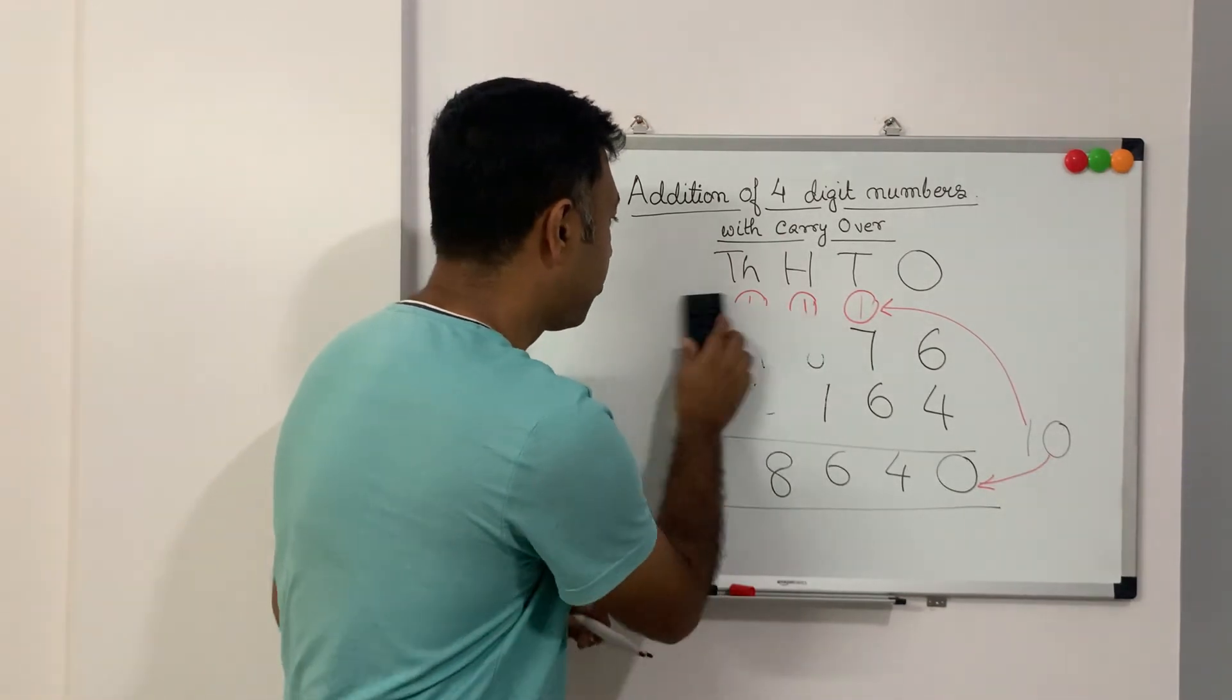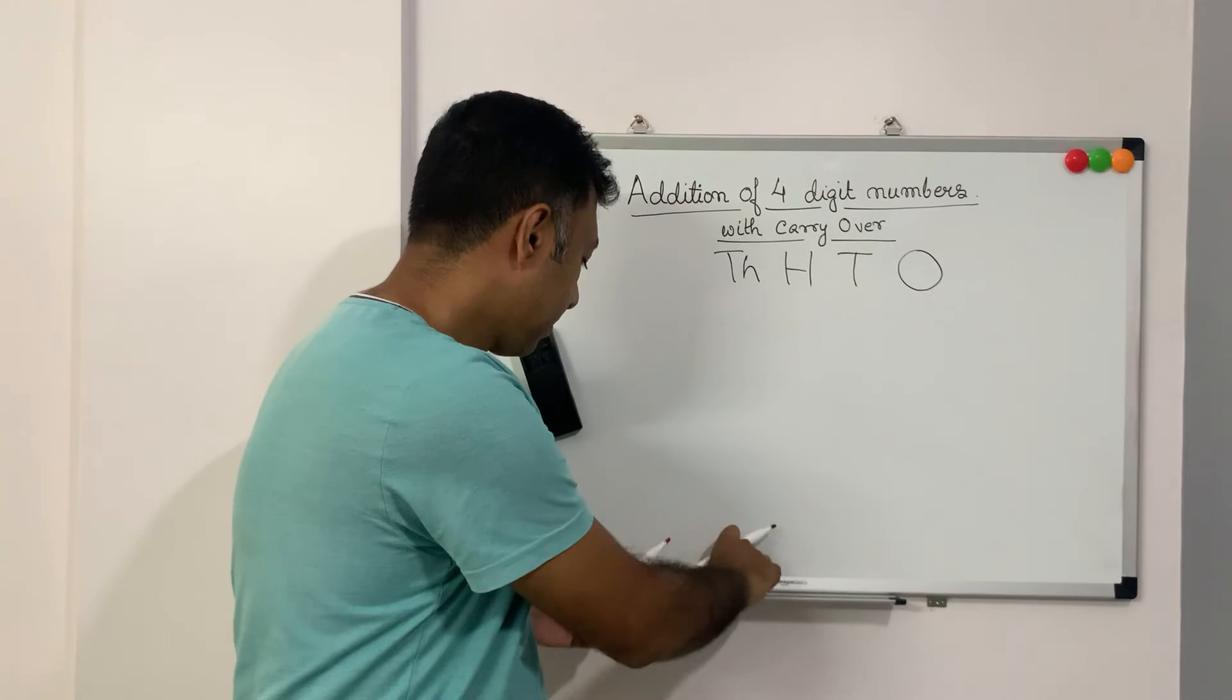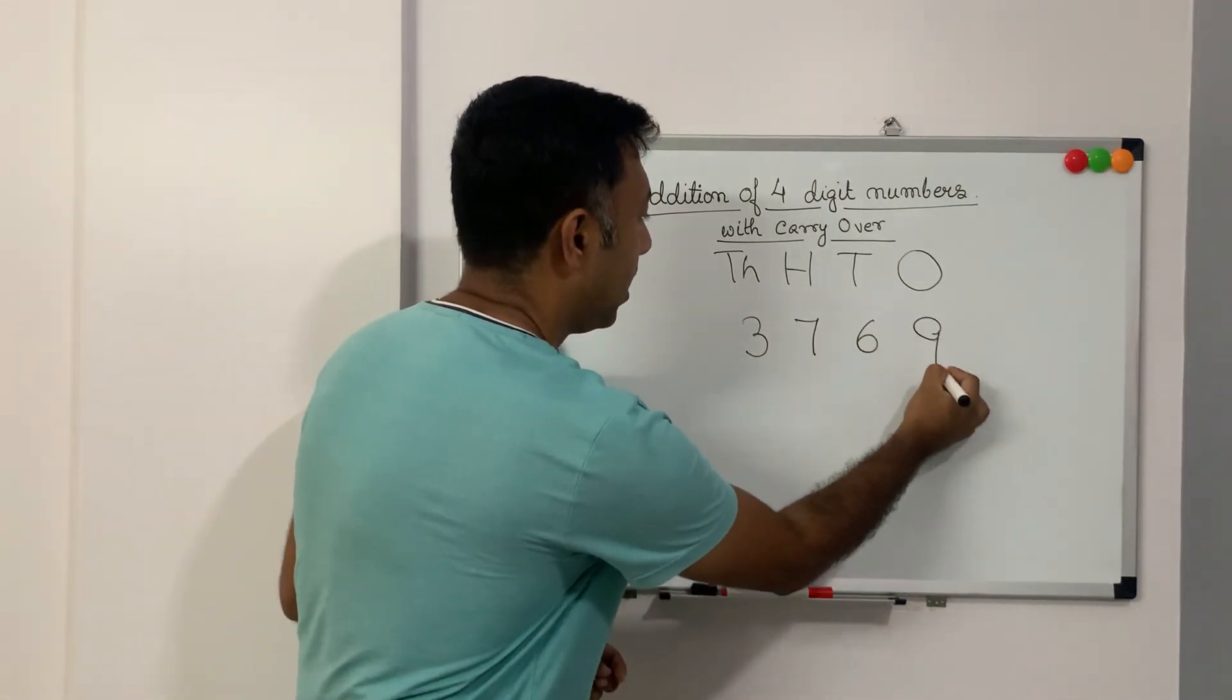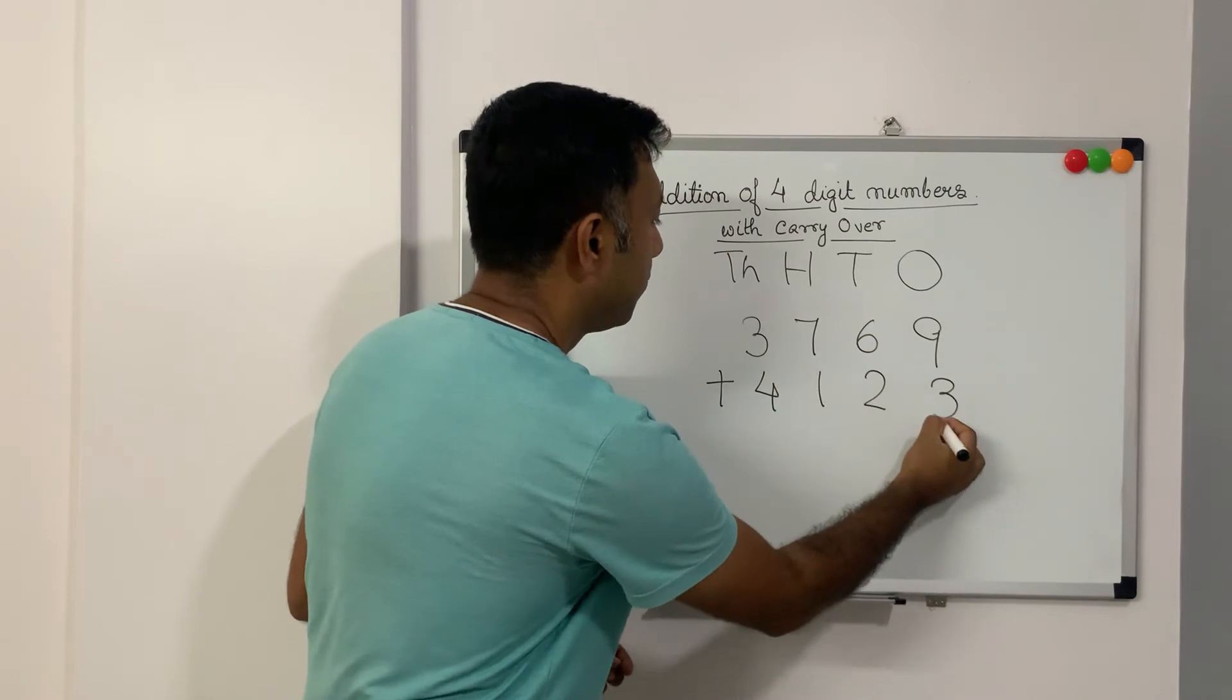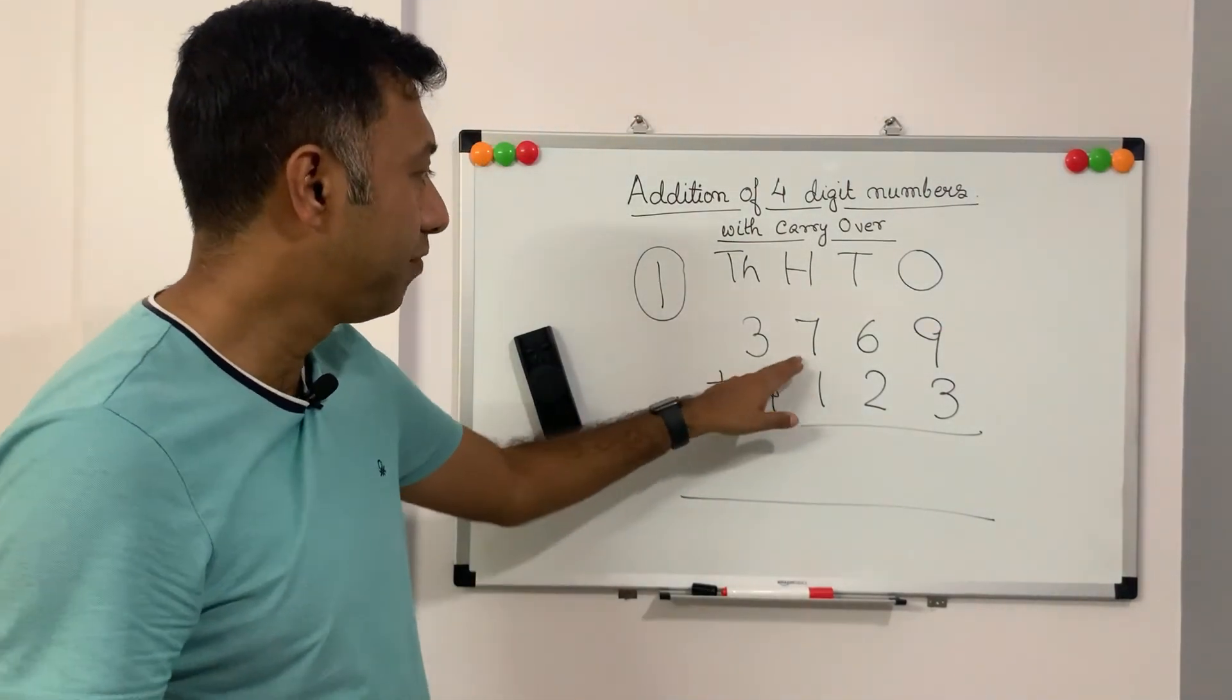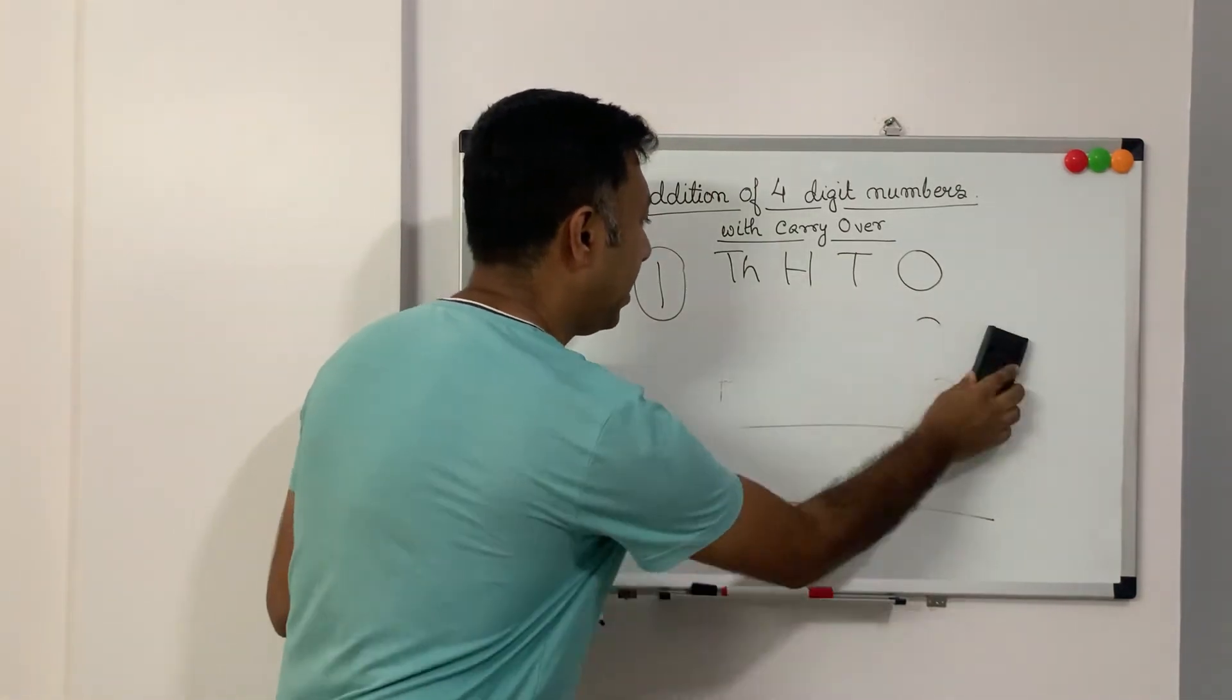Now let me give you two sums for your homework. Please note them down and you can practice them. I will give the solution in the results. So please make a note of these two sums and practice them at home. Your sums are 3769 plus 4123. This is your homework number 1. Okay. Please note it down quickly. Done.